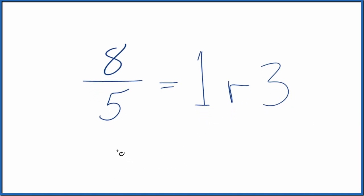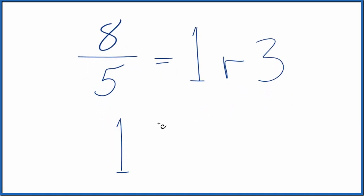We take the whole number, that's the 1, then the remainder, that becomes the numerator, and then we bring the denominator down from our original fraction. And 8 fifths, the fraction, equals the mixed number 1 and 3 fifths.